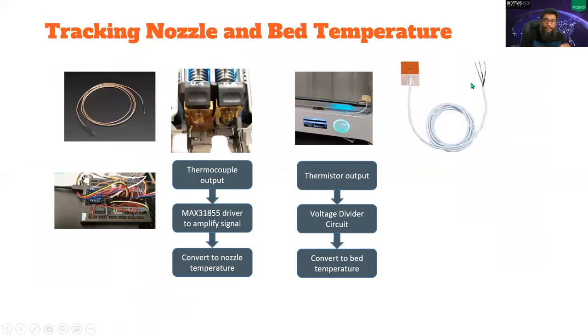For tracking the temperature, we used thermistors for the bed temperature. It comes with a stick-on mechanism so it was pretty easy to deploy and thermistors work on the principle of change in resistance with the change in temperature. So we deployed a very simple voltage divider circuit and converted that change in resistance into temperature through different functions. But this thermistor temperature range is less like it's around 150 celsius. That was pretty much fine for the Ultimaker printer bed.